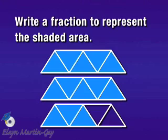Then the next one: one, two, three, four, five — all of them in that second whole, so so far ten. And then three in that final whole, three are shaded, so we have thirteen shaded, so our numerator is thirteen.